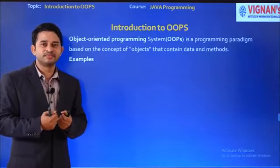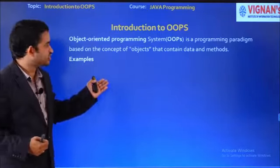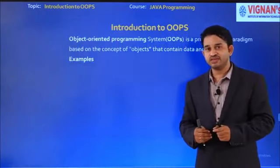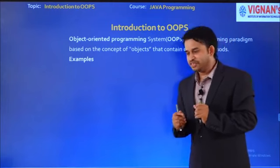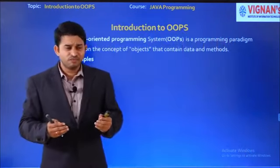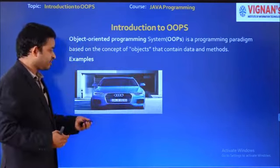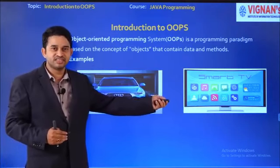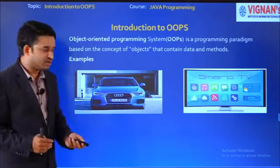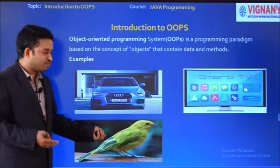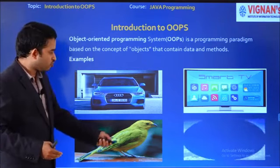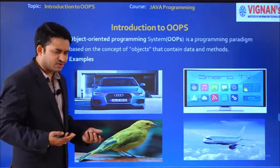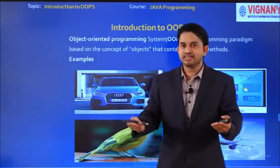Now we start our first topic: introduction to object-oriented programming. Before explaining OOP, we should know what an object is. An object is a real-world existing entity. For example: a car, a smart TV, a bird, a flight — these are all examples of objects. A student is an object, and myself is an object. All these are real-world entities.